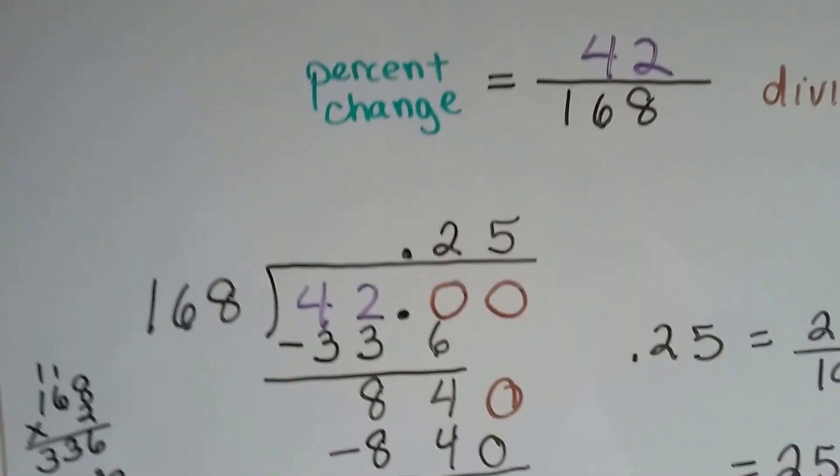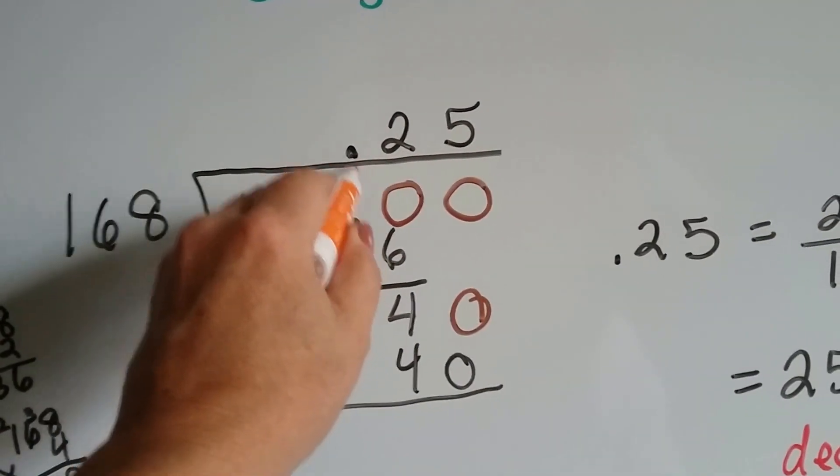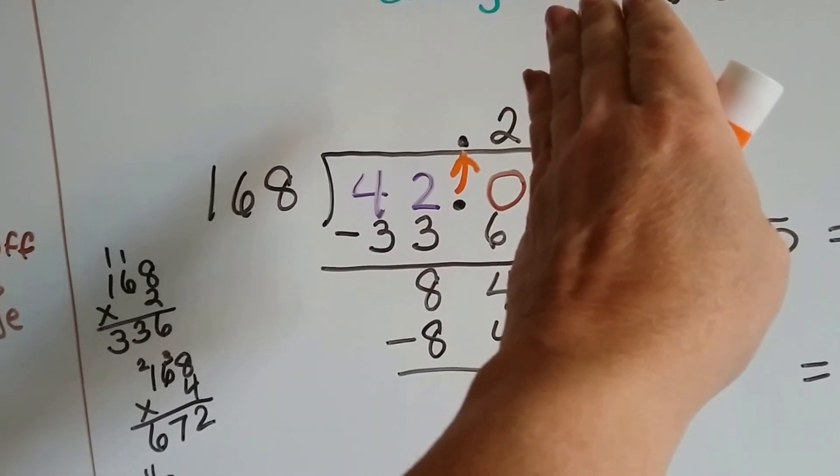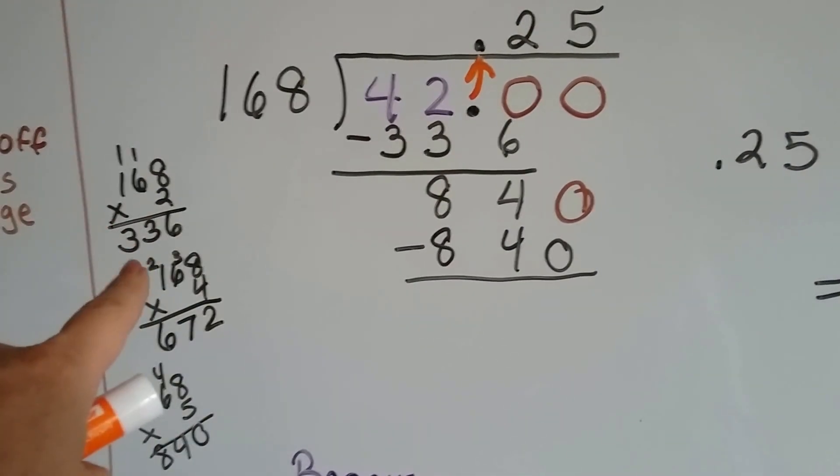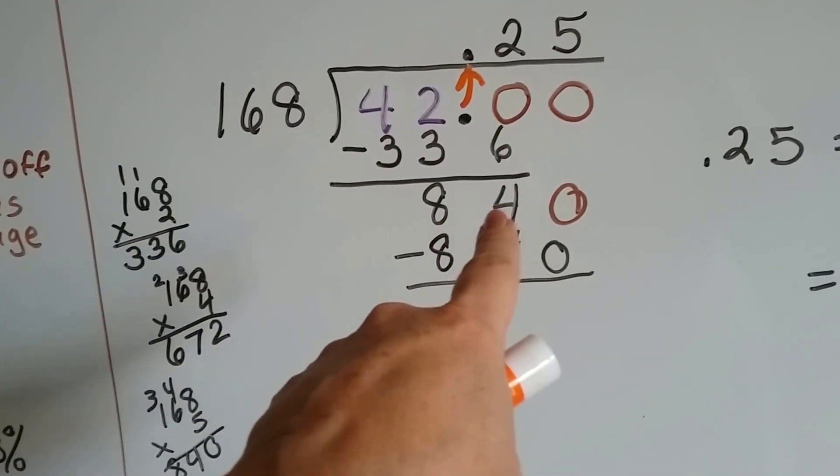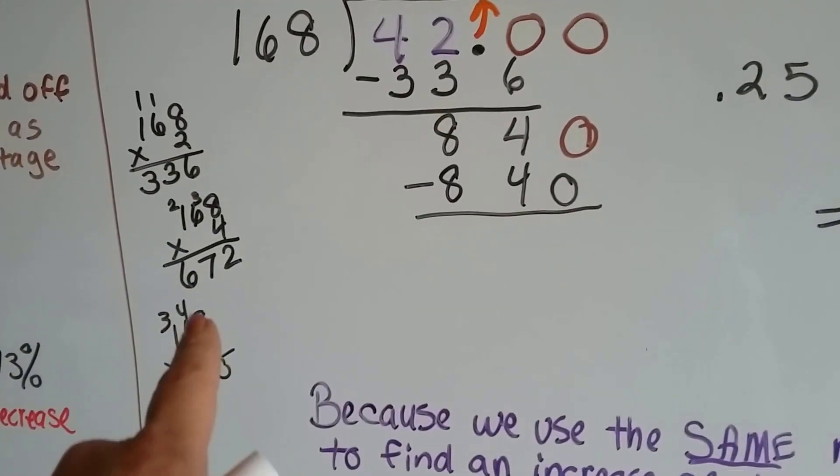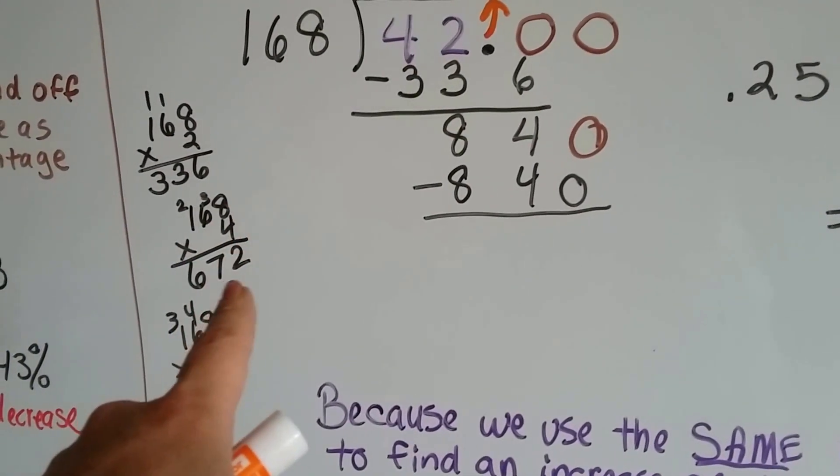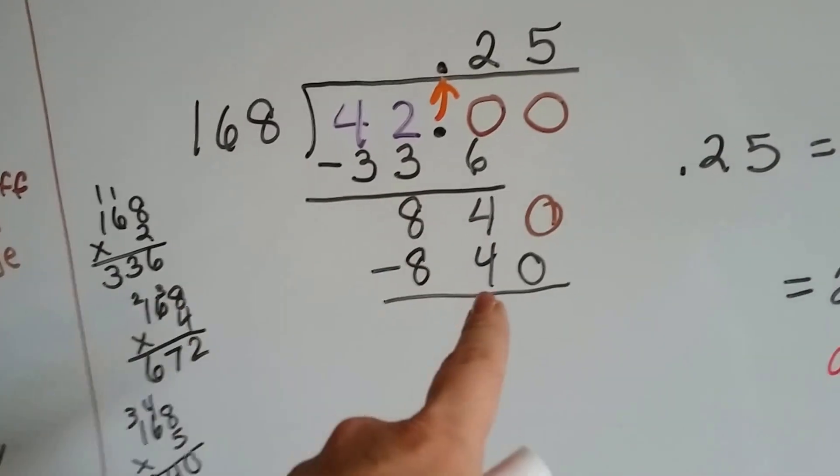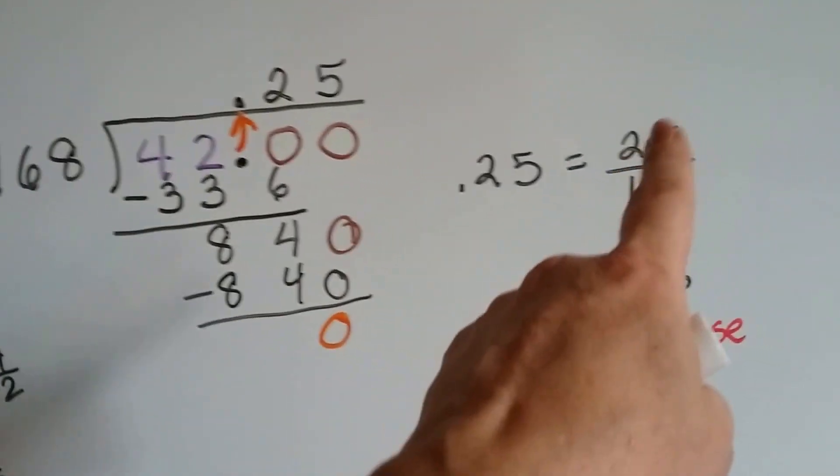So .168 goes into .042 how many times? Well, it can't. So we have to add a decimal point and some zeros. Decimal point goes straight up. .168 can't go into .042, but it can go into .420. And we do a little multiplication on the side and see that 2 would fit. That's .336. We subtract it from the .420 and get .084, drop a zero down to help the .168 go into it. Now I've got .840, and I tried .168 times 4, and it was really small. So I tried .168 by 5, and it was .840. It was perfect. So it ends up being a zero. So we know it's .25, and .25 is 25 hundredths.